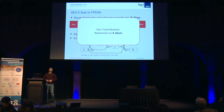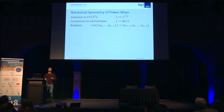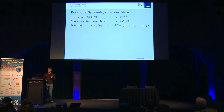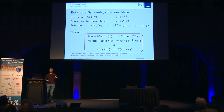Our contribution is how to reduce that by 50 percent — from eight slices to only four slices. We need some theory. We consider inversion represented as a power map, use a conversion to normal basis, and use bit rotation. We borrow a theorem from Raimann et al.: if you have a power map represented in normal basis, the resulting function S has rotational symmetry — if you rotate the input bits, the output bits are also rotated.